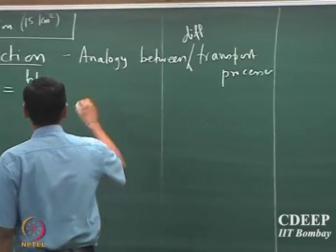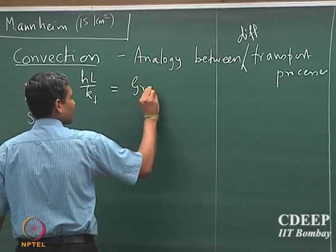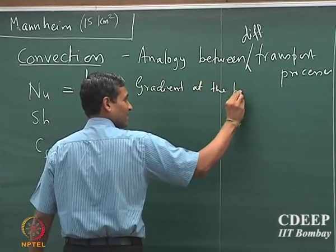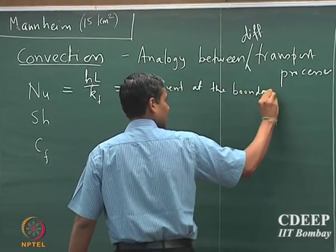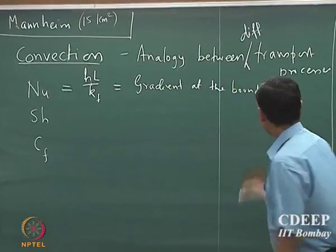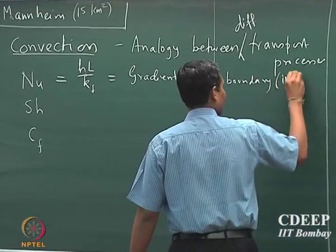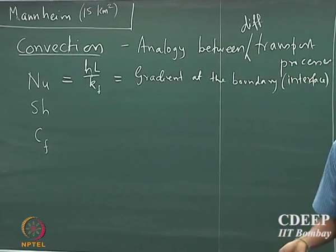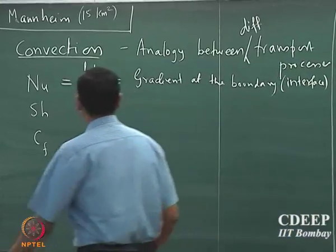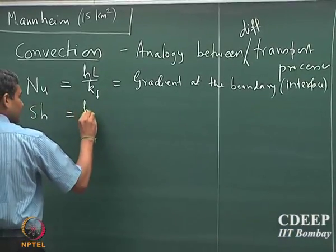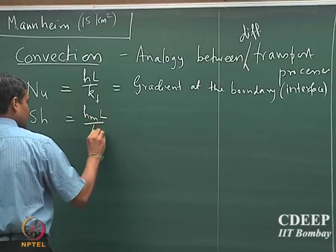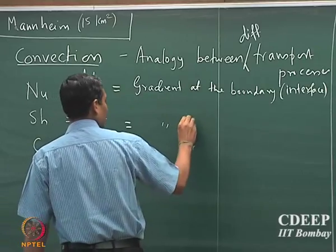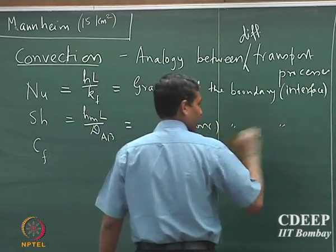It is the gradient at the boundary — I should rather say interface. It reflects the gradient at the interface. And similarly, we could write the concentration gradient at the interface.